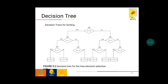This is the decision tree for the three element selection sort. First we are comparing A less than B. If it is true, we are comparing A less than C. If it is true then we are comparing B less than C. If B less than C is true, the condition satisfied is A less than B less than C. If false, the condition satisfied is A less than C less than B. If A less than C is false then we compare B less than A; if false the condition satisfied is C less than A less than B. If the root node A less than B is false then we compare B less than C; if true then we compare A less than C — if true the condition is B less than A less than C, if false the condition is B less than C less than A. If B less than C is false then we compare B less than A; if true the condition is C less than B less than A.